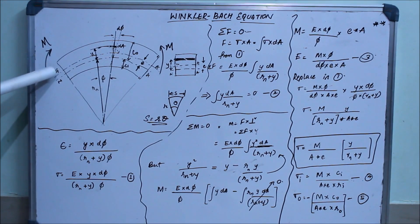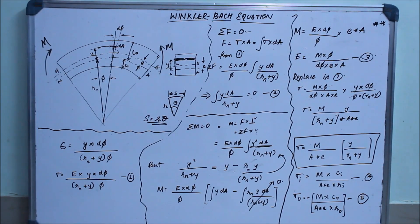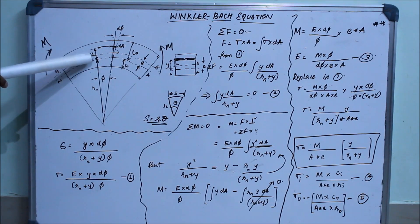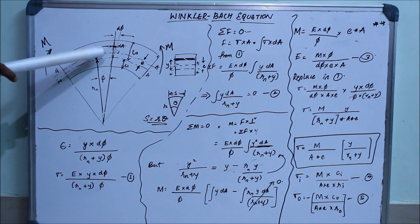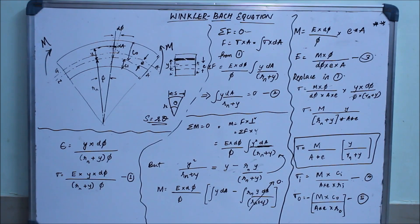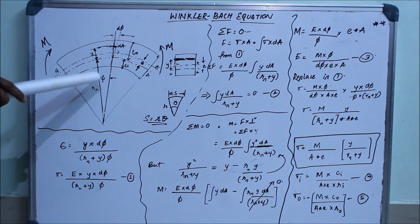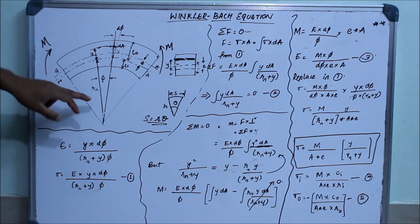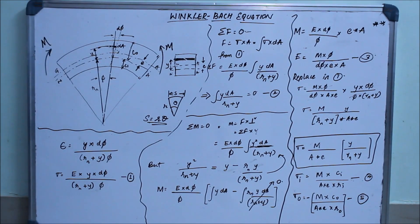Coming to this diagram, this is a curved beam. As I said before, the geometric axis and the neutral axis do not coincide in curved beams — the neutral axis is below the geometrical axis. We'll consider an element which is at a distance y from the neutral axis. This element has an area of delta A, and the element subtends an angle phi, so the length of the element is going to be (rn + y) times phi.